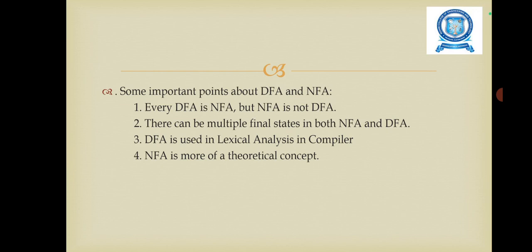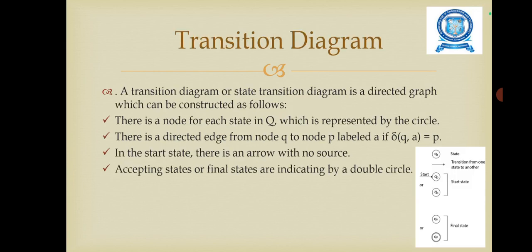Next we are going to see the transition diagram, also called a state transition diagram. It is a directed graph which can be constructed according to certain points. There is a node of each state in Q which is represented by a circle. There is a directed edge from node Q to node P labeled A if δ(Q, A) = P. In the start state, there is an arrow with no source. Accepting states or final states are indicated by a double circle. The diagram shows some notations that are used in the transition diagram.